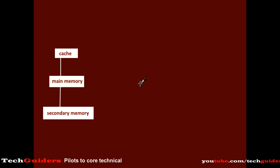A basic memory hierarchy model consists of the secondary memory at the lowermost level, then the main memory, and then the cache — there may be more than one level of cache. All the required programs and data are permanently stored in the secondary memory. Only a part of it is kept in the main memory, and again a part of it based on the locality of reference is kept in the cache. Since the secondary memory is very slow, the processor never directly accesses the secondary memory, but it can directly access the cache and main memory.